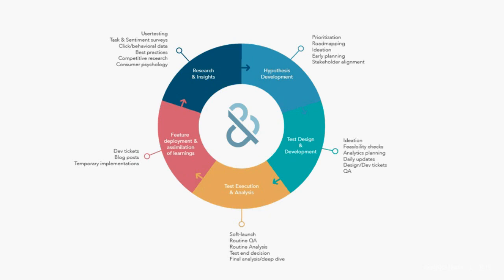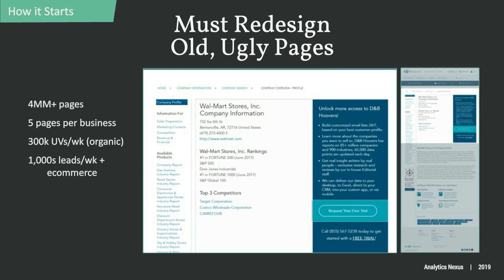This has been a long introduction to what are really just some vivid examples of this process — the process working well and maybe not so well. We'll start with a major site redesign project. This page is what we call a company profile page. Dun & Bradstreet is a commercial data company, and we have the world's largest database on companies. This was one of our online business directories, kind of like online yellow pages.